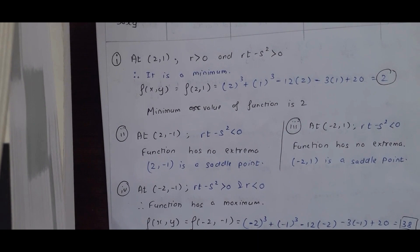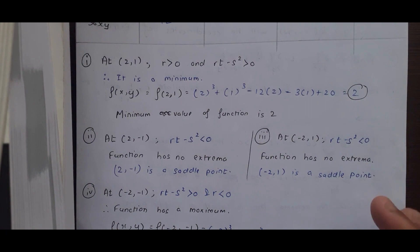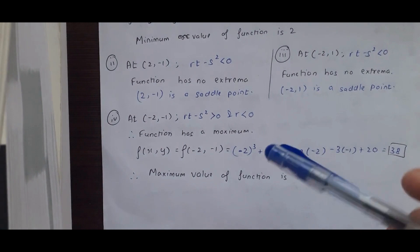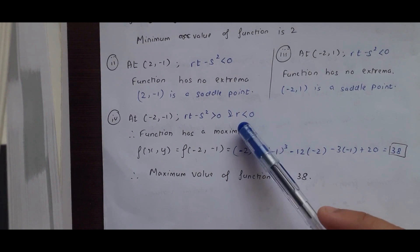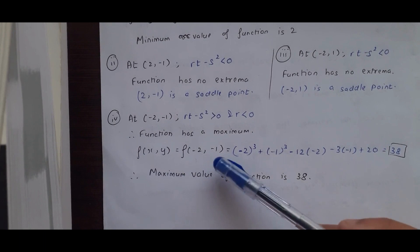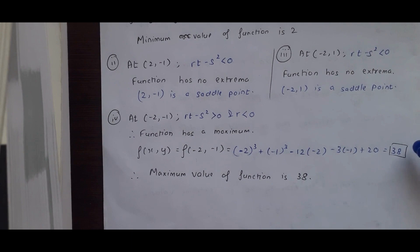At (−2, 1): again rt minus s² is less than 0, so the function has no extrema — it is a saddle point. At the last point (−2, −1): rt minus s² is greater than 0, but r at this point is −12, so r is less than 0. Therefore the function has a maximum. Substituting (−2, −1) into the original equation gives the value 38. So the maximum value is 38 and the minimum value is 2.